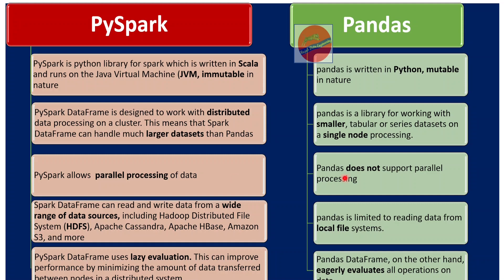The next difference is that a Spark dataframe can read and write data from a wide range of data sources, such as HDFS, Cassandra, HBase, Amazon S3, ADLS, and many more. But Pandas is limited to reading data from the local file system. And the last difference is that PySpark uses lazy evaluation, while Pandas uses eager evaluation.